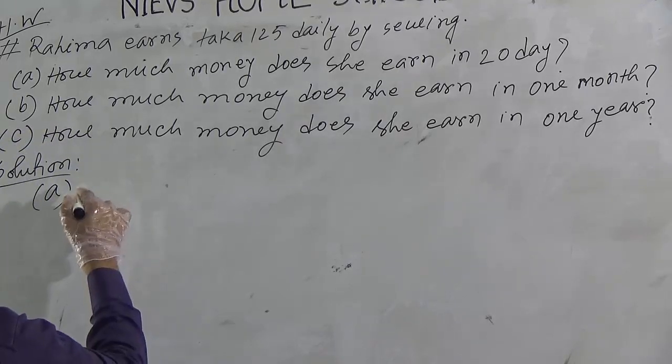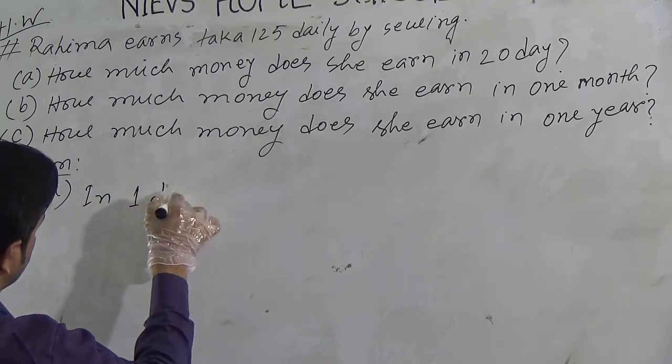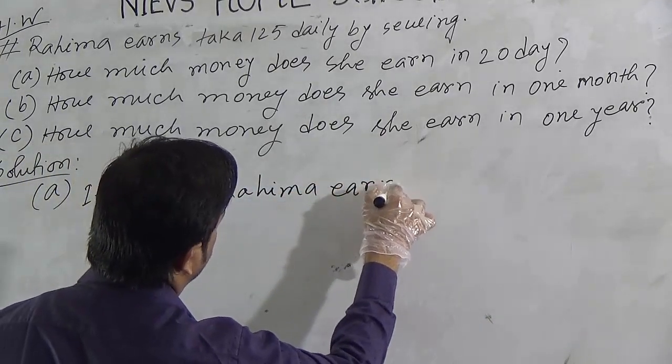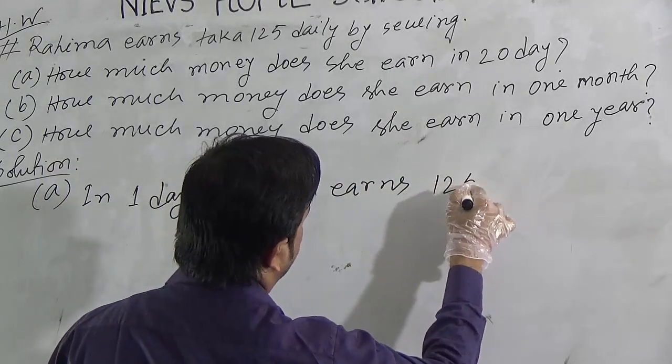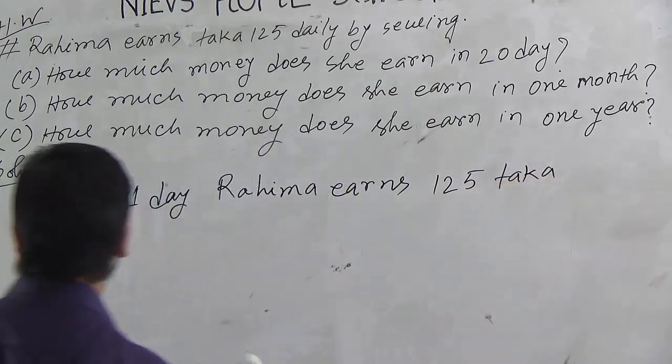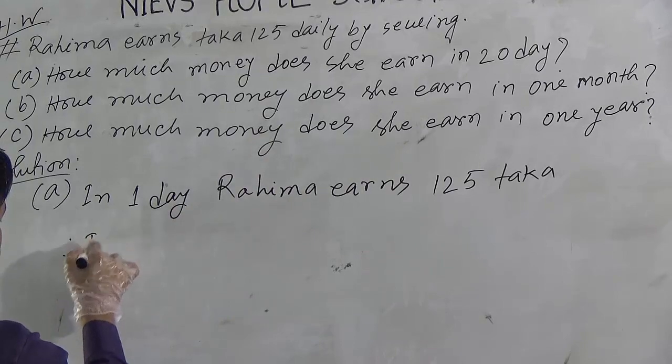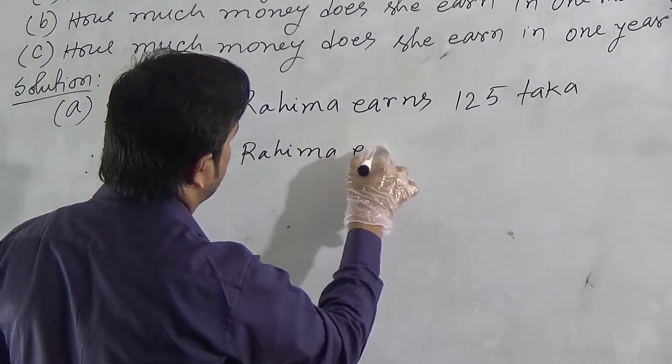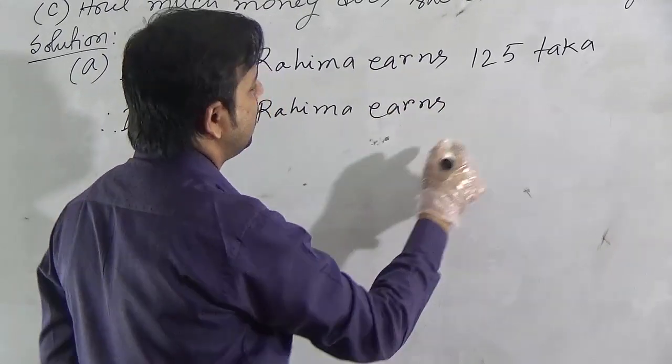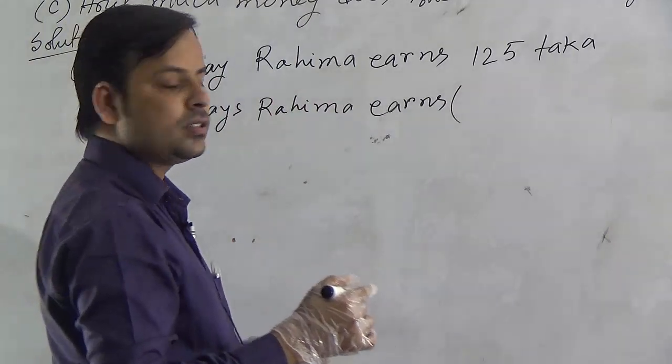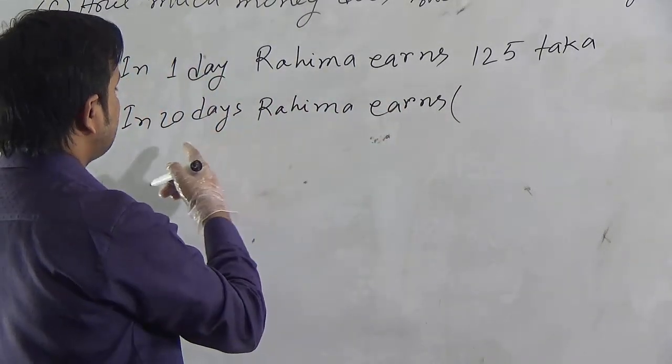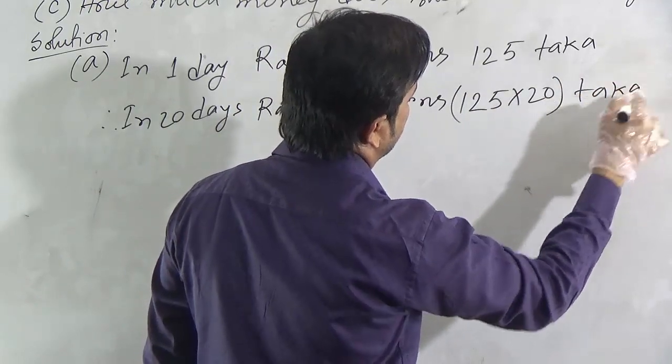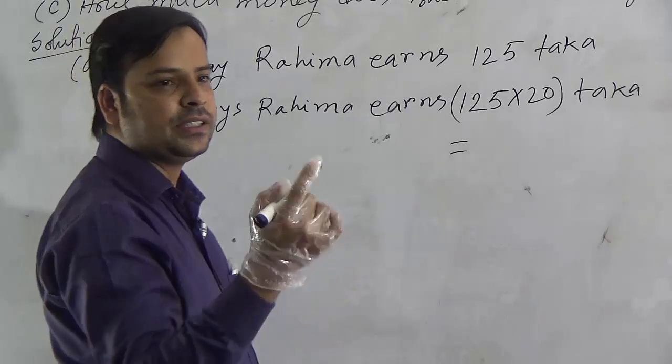Let us start. We can write, in one day, Rohima earns 125 Taka. As the number of days increases, his earning will also increase. So we have to multiply. We have to multiply 125 by 20.